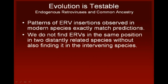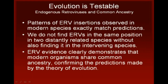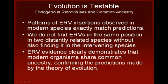And, just as expected, we do not find any examples of ERV insertions that are shared by, say, humans and mice, but not also by chimpanzees. In other words, we do not find an ERV in the same position in two distantly related species without also finding it in each of the intervening species. Clearly, the best explanation for this pattern of shared ERV sequences is that it is the result of inheritance from common ancestors.